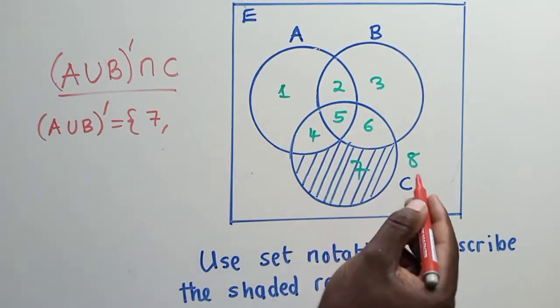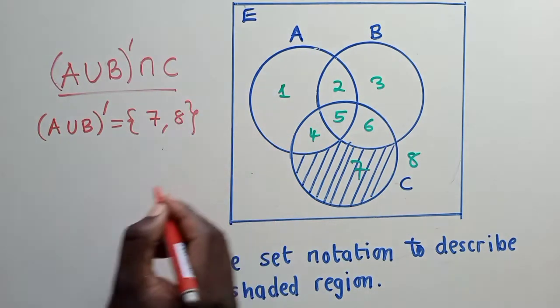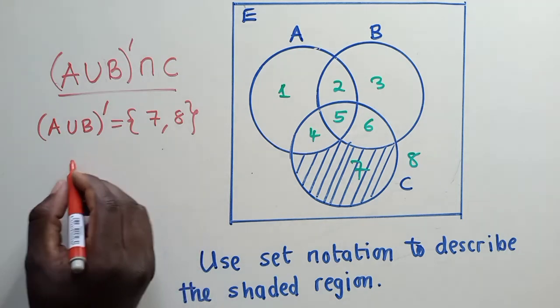So 7 is outside, is not in A and B. 8 is also outside. So now we go to C.